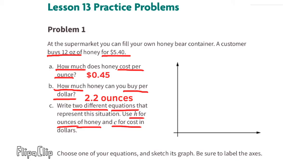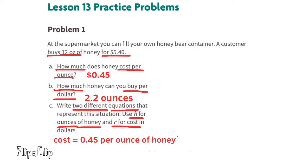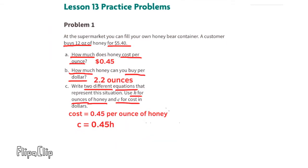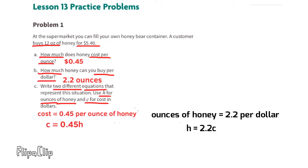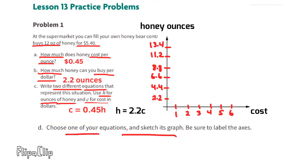The cost is 45 cents per ounce of honey, so the equation can be written as c = 0.45h. Since you can buy 2.2 ounces of honey for $1, you can also write the equation h = 2.2c. Part D: choose one of your equations and sketch its graph, being sure to label the axes.